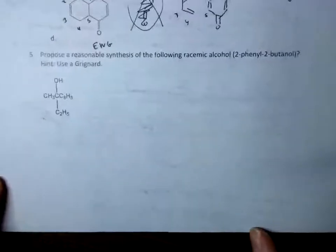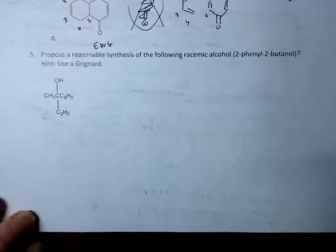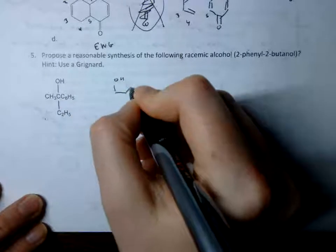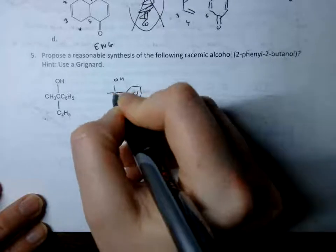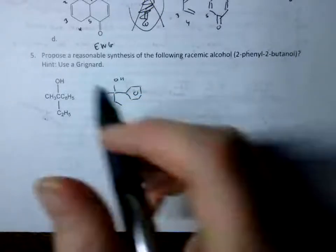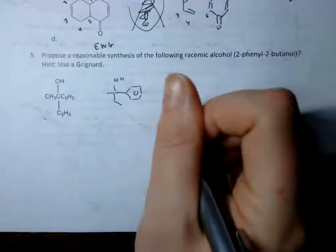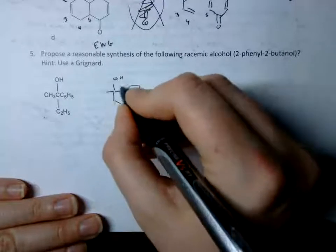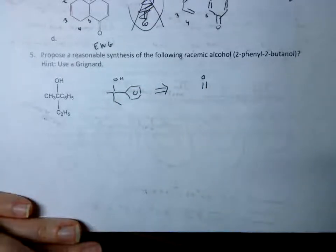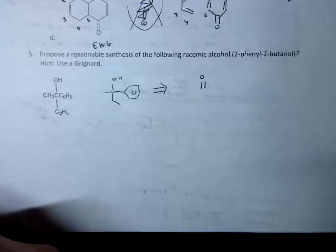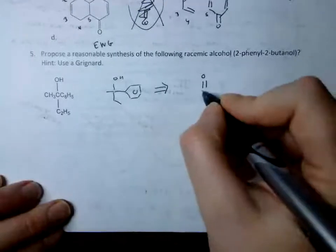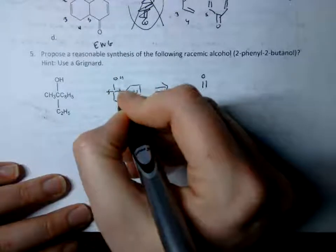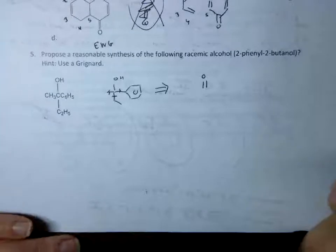The next question is to propose a synthesis for the following alcohol using a Grignard reagent. One question I got a lot: C6H5 is actually a benzene ring — that's just shorthand. Whenever I think about retrosynthesis with a Grignard reaction — Grignard reagents make carbon-carbon bonds — so I can break any one of these carbon-carbon bonds, and that broken bond becomes my Grignard reagent. Whatever became an alcohol usually started out as a carbonyl of some kind.